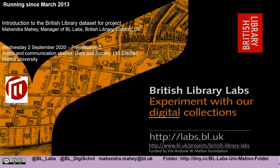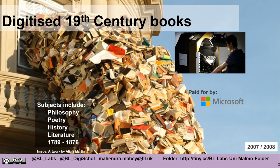Hello and welcome back to presentation two, where I'm going to go into a little bit more detail about the data sets you're going to be using for your project. As you may remember, it's the digitized 19th century books collection, which is about 65,000 digitized books, largely from 1789 to 1876, covering topics like philosophy, poetry, history and literature. The digitization took place in 2007 and 2008, and the 65,000 books from that era represents about 2.6 percent of our physical collection. The funding for this project came from Microsoft.